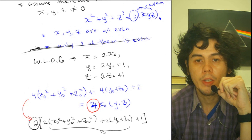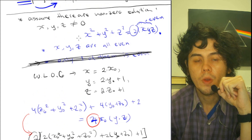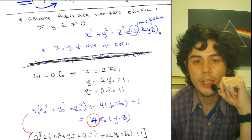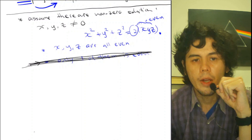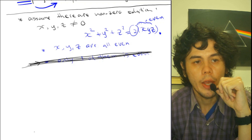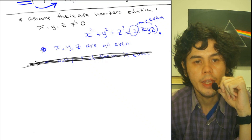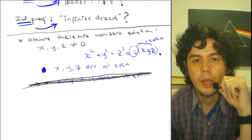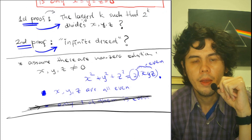So this case cannot be true. If x, y, and z must satisfy this equation, then x, y, and z must all be even. Now I will start the first proof: noticing the largest k such that 2 to the power of k divides x, y, and z.